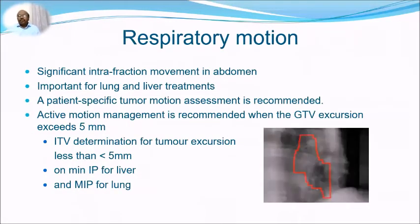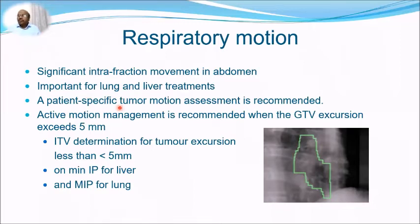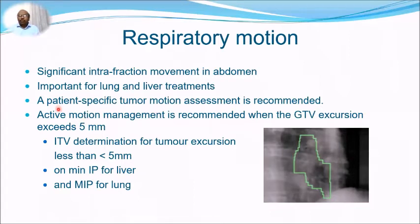Respiratory motion is an important concern for SBRT, particularly for lung or abdominal treatments. There is significant interfraction movement in the abdomen due to respiration. A patient-specific tumor motion assessment is required for lung and liver treatment — it cannot be generalized. Active motion management is recommended when GTV excursion exceeds 5 mm; if it is less than 5 mm, the ITV concept can be used. MIP for liver or maximum IP for lung are also options.